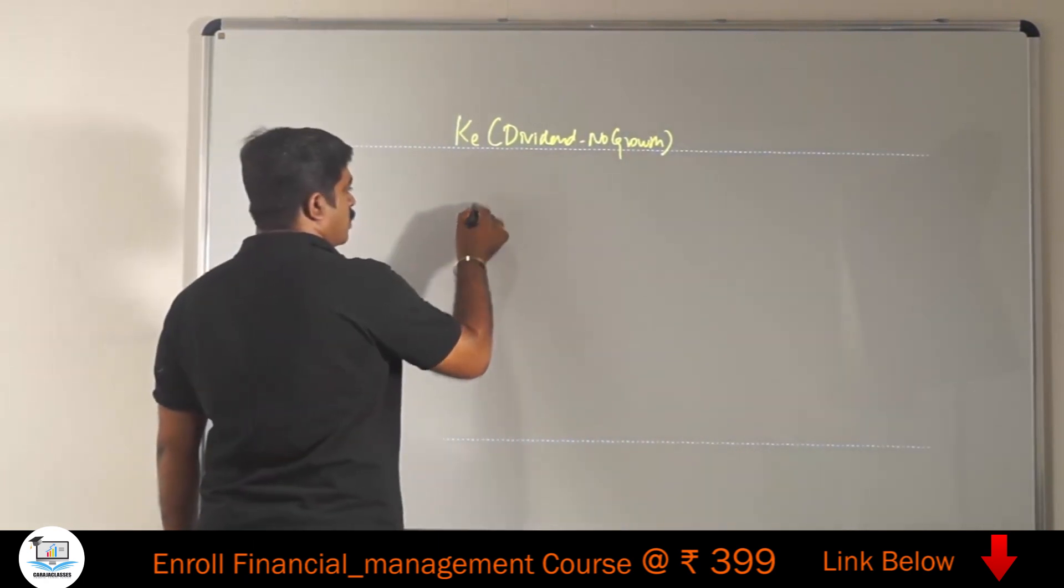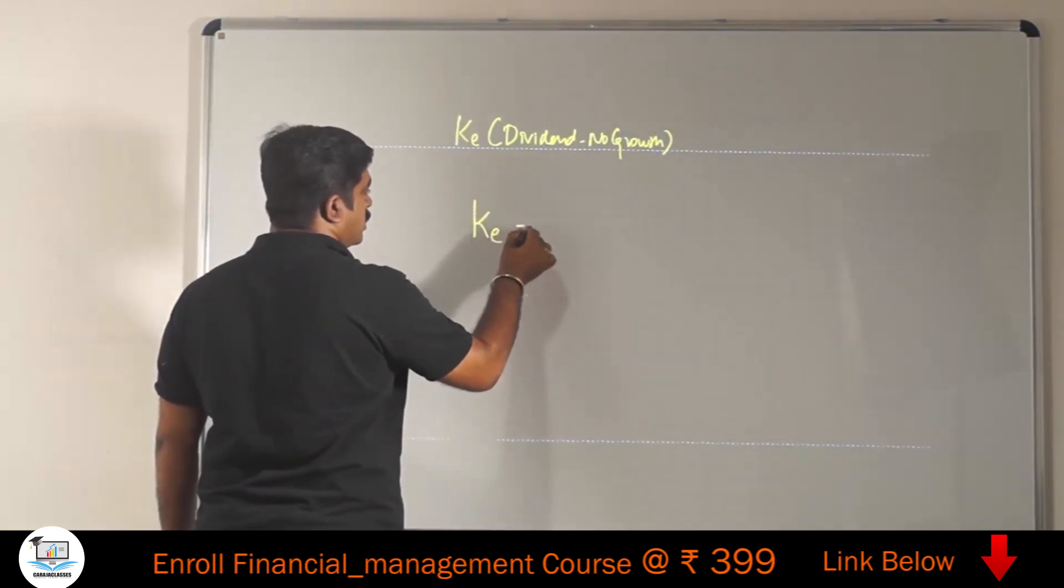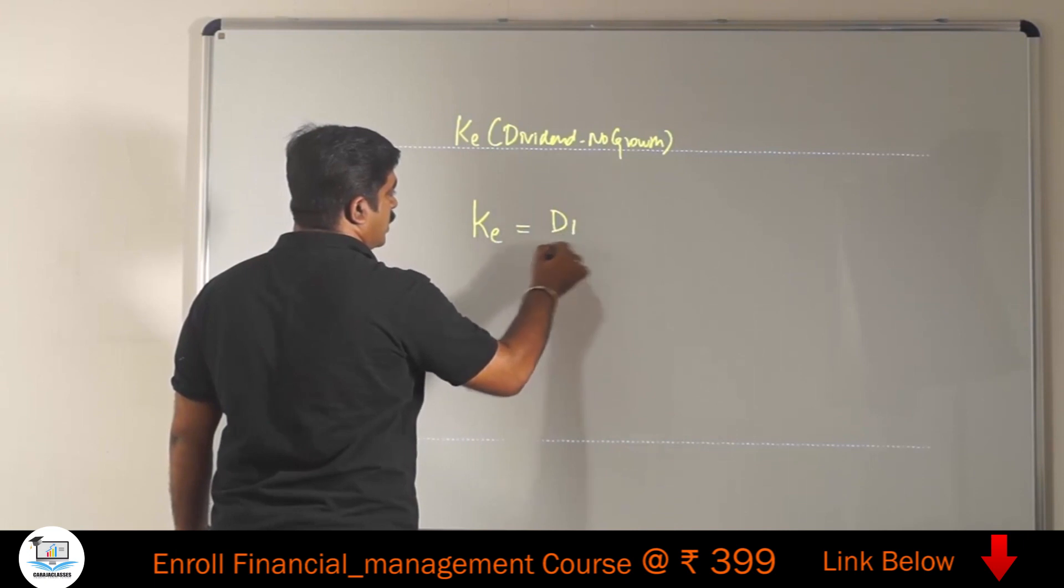Cost of equity is D1 divided by P0. This is the formula.